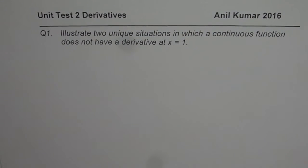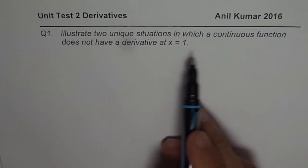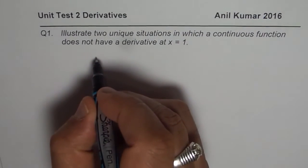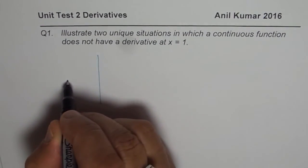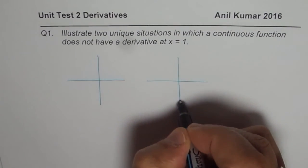So here is the very first question. Question number 1, it says illustrate two unique situations in which a continuous function does not have derivative at x equals to 1. So a continuous function will not have derivative if it has a cusp or a corner or if it has a vertical tangent.